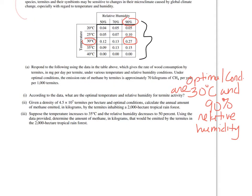A2. Given a density of 4.5 times 10 to the 7th termites per hectare and optimal conditions, calculate the annual amount of methane emitted in kilograms by the termites inhabiting a 2,000 hectare tropical rainforest. First, hectare is metric for acre. Make sure you know that. Sometimes the word hectare confuses students if they don't know that it's a metric system for area or acreage.